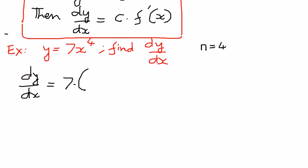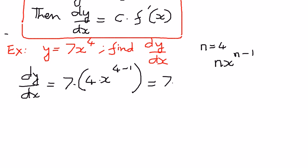Here n is equal to 4. According to the power rule, the first derivative of x to the power of n is n times x to the power of n minus 1. So we get 7 times 4x to the power of 4 minus 1. When we simplify, 7 times 4 is 28, and 4 minus 1 is 3, giving us 28x to the power of 3.